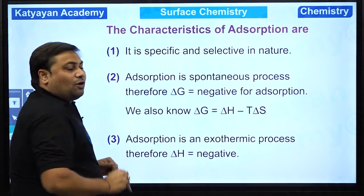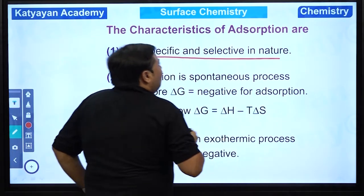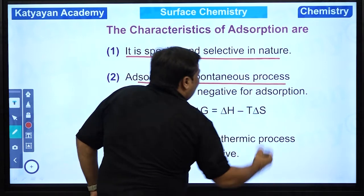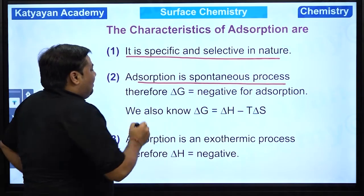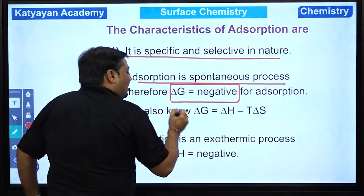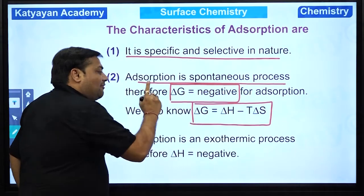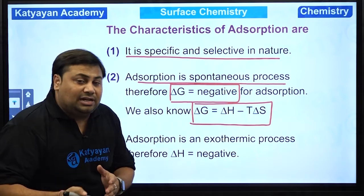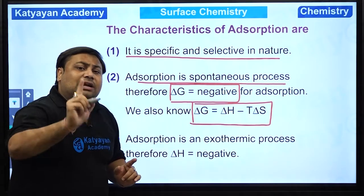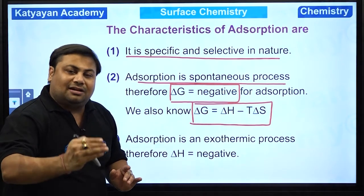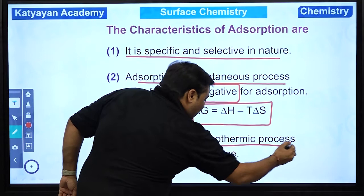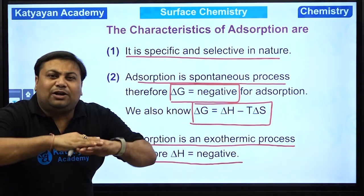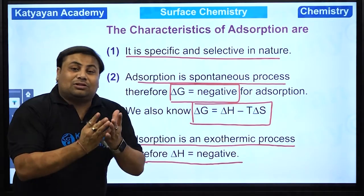Characteristics of adsorption — pehla part: it is specific and selective in nature. Adsorption is a spontaneous process — yani apne aap adsorption hota hai, aur apne aap ke liye delta G ko negative hona padega. We have the Gibbs-Helmholtz equation: delta G = delta H − T·delta S. Jab tak delta G negative hoga, adsorption occur karta rahega. Adsorption is an exothermic process — delta H ki value negative hogi, yani jab adsorption hoga, molecules surface pe bind ho rahe honge, energy release ho rahi hogi.